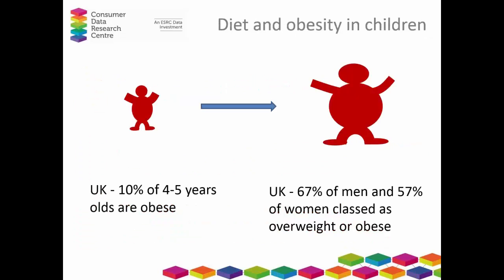Considering the importance in children: 10% of four to five-year-olds in the UK are obese, but by adulthood it's 67% of men and 57% of women classed as either overweight or obese. Obese children are very likely to go on to become obese adults. It's not just that they have obesity as a problem in adulthood, but also potentially all those other non-communicable diseases. Independent of whether obese children become obese adults, they're more likely to have these different types of non-communicable disease.